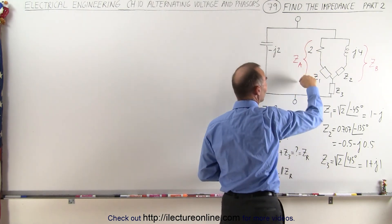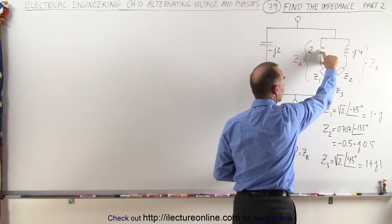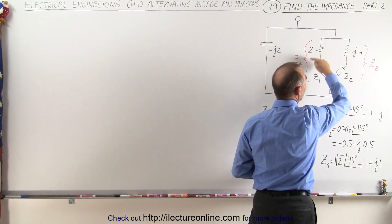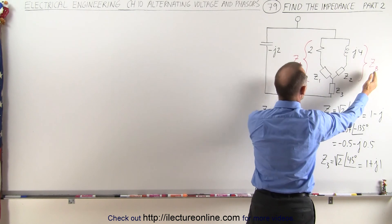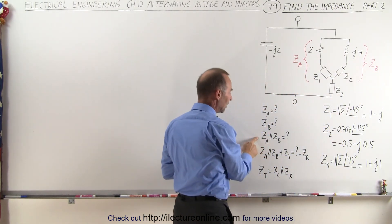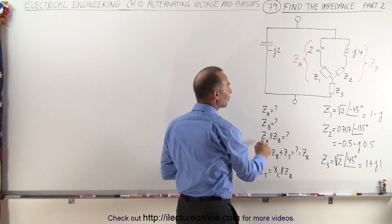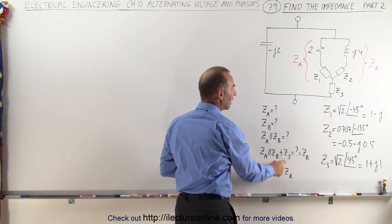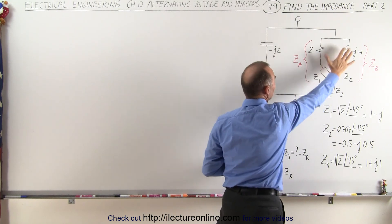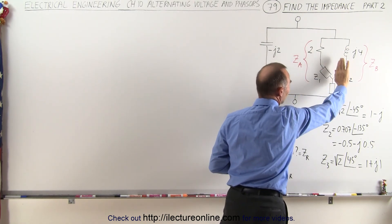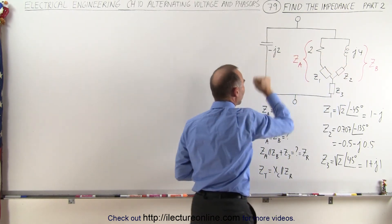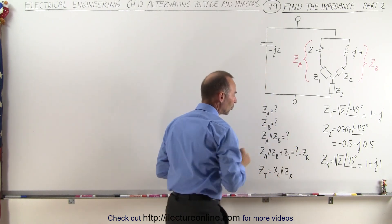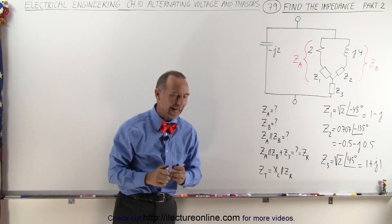First we're going to calculate Z sub A, which is combining these two. Then we calculate Z sub B, which is combining those two. Then we're going to find the parallel combination of Z_A and Z_B. We're going to calculate the parallel impedance of these two combined, then add those together in series with Z3. Finally, we're going to take the right impedance Z sub R and combine it with the minus J2, which is the X sub C on the left side, and they're in parallel to find the total impedance. So that's the plan of attack.